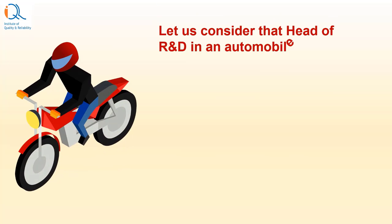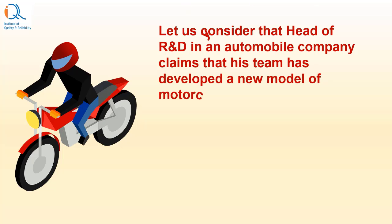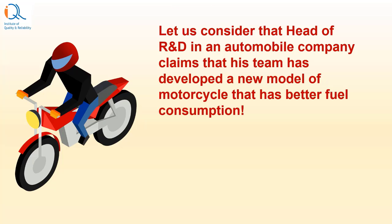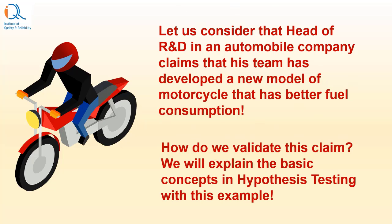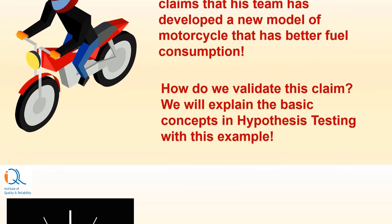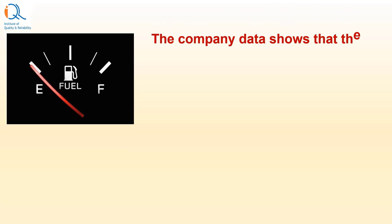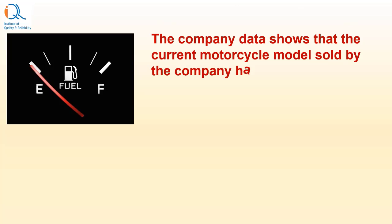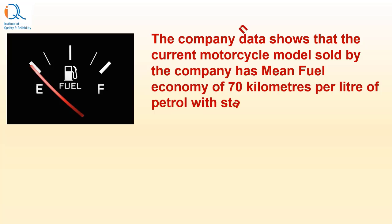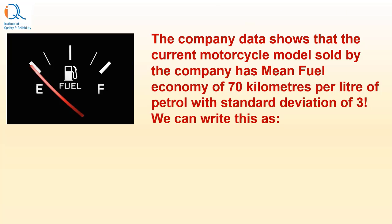Let us consider that the head of R&D in an automobile company claims that his team has developed a new model of motorcycle that has better fuel consumption. How do we validate this kind of claim? We will explain the basic concepts in hypothesis testing with reference to this example. The company data shows that the current motorcycle model has a mean fuel economy of 70 km per litre of petrol, with standard deviation of 3. We can write mean mu as 70 and standard deviation sigma as 3.